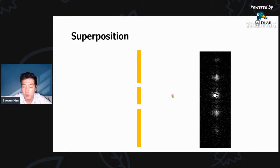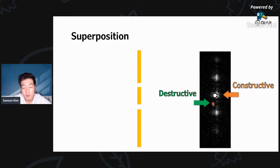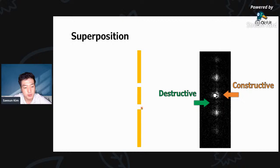To explain this, we must conclude that each individual photon somehow splits into two and travels both slits at the same time, then interferes with itself. But what kind of wave is interfering? In the experiment, where there is constructive interference, there are many photons hitting that place — a high probability of finding a particle. Where there is destructive interference, there is no particle — a low probability. So we must conclude that it is some kind of probability wave. Since there are many different locations, the particle can be found with a probability. This raises the concept of superposition: the particle exists at the upper slit and lower slit at the same time, each with 50% probability.